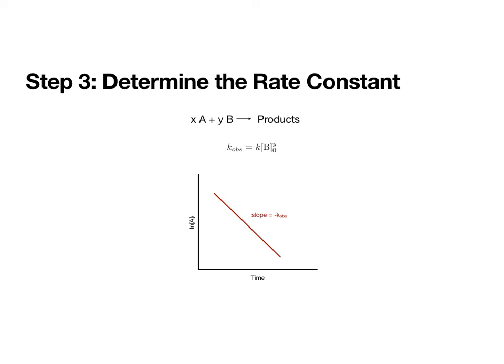We're not quite done yet because what we have measured is not K, we have measured K observed. And we have this relationship for K observed. And remember from step two, we found Y equals a number, hopefully a nice, easy number. So once we know Y, we can use this relationship of K observed equals K times the initial concentration of B raised to some power.